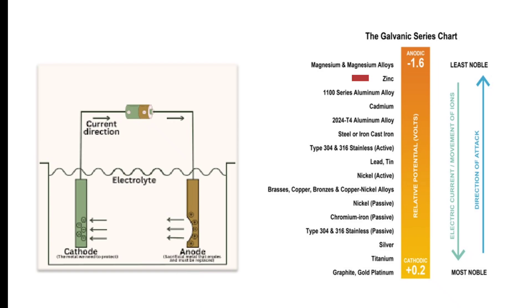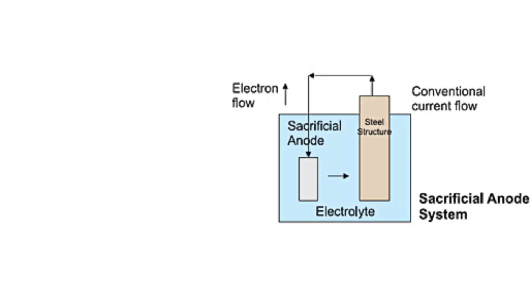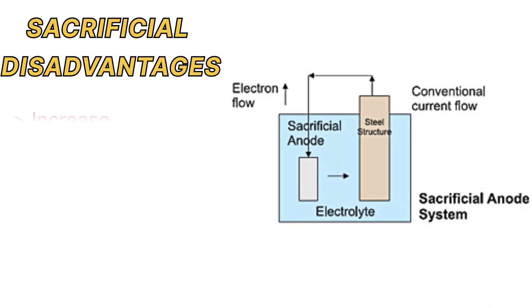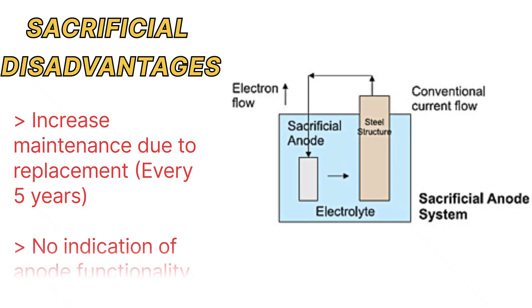Elements such as zinc, aluminum, magnesium, or their alloys are used as sacrificial anodes to protect the parent element like iron or steel which forms the cathode. However, these sacrificial anodes do have some disadvantages such as increased maintenance due to replacement every five years, increased hull resistance, and no proper means to detect whether the anode is functioning properly.